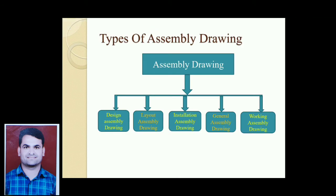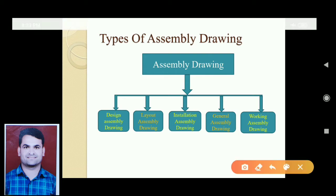There are basically four types of assembly drawing. The first type is a design assembly drawing. A design assembly drawing is the drawing which is prepared at the design stage on a larger scale.